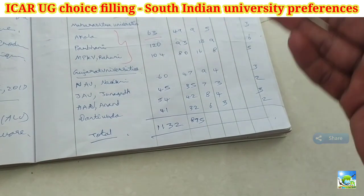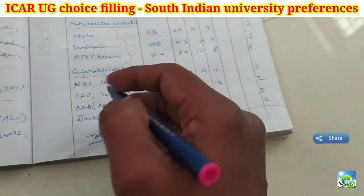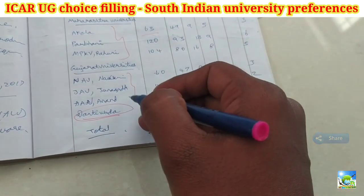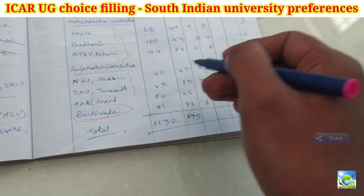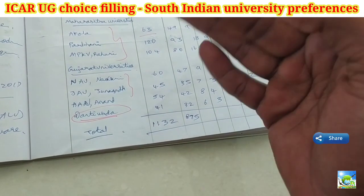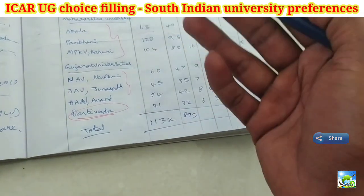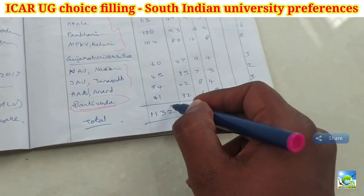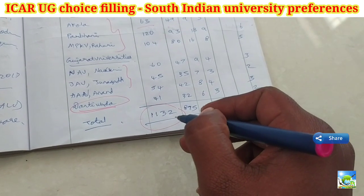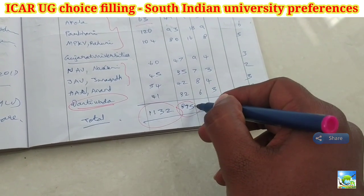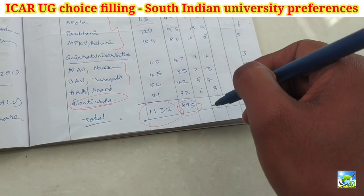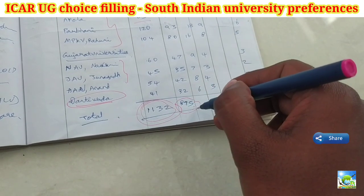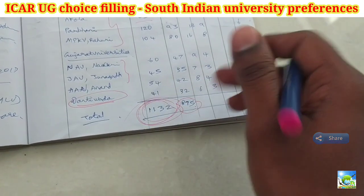Next you can give Maharashtra universities: Akola, Parbhani, and Rahuri — only these three as they have seats. Next are Gujarat universities — Navsari, Junagadh, Anand — you can avoid Dandi Vada but give Navsari, Junagadh, and Anand. The agriculture universities in all places — Tamil Nadu, Kerala, Andhra, Telangana, Karnataka — have students from all states, so I can provide contacts if needed.